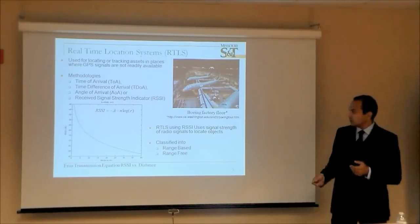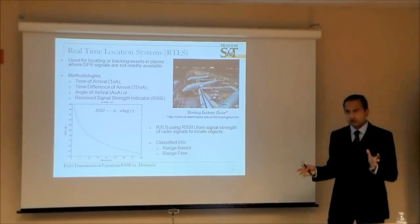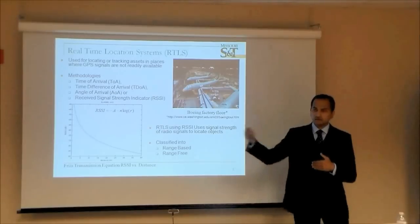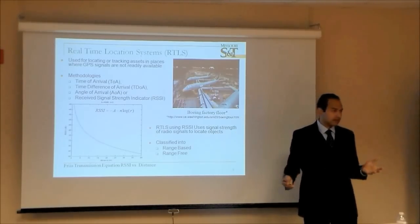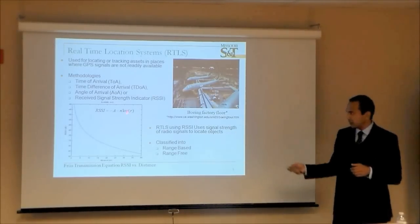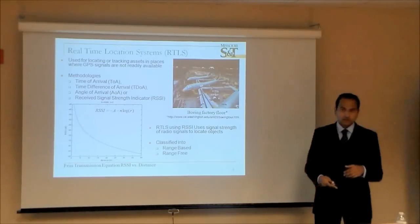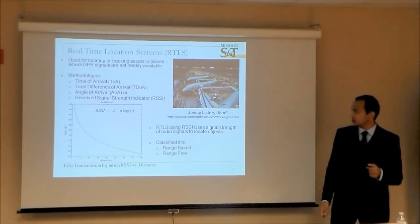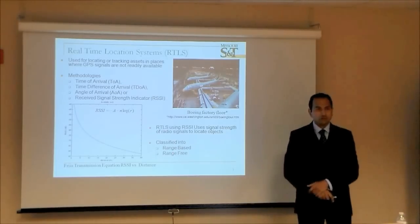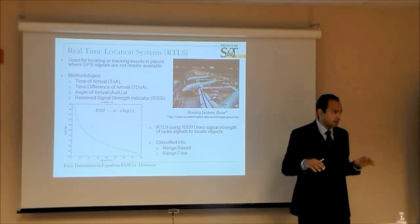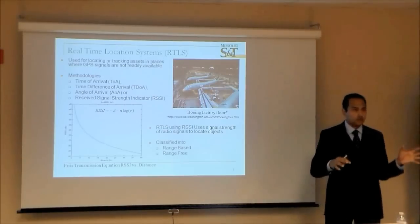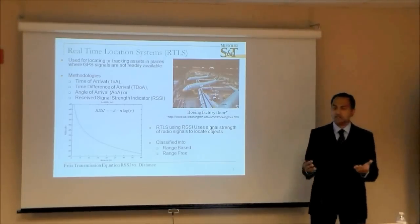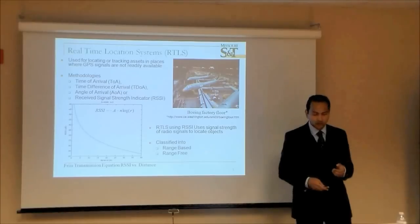Signal strength based localization is broadly classified into two methods: range-based and range-free. The range-based method estimates the distance to a transmitter from multiple receivers and uses multilateration or trilateration to find the position, relying on a Friis transmission equation to relate radial distance to the power signal measured by a receiver. The range-free method takes an RSSI map of the area, stores it in a file, and uses fingerprinting or pattern matching to locate an unknown transmitter.